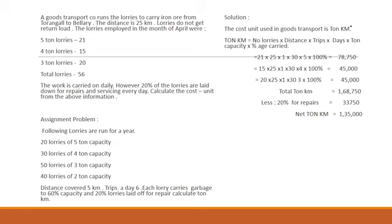As stated in the problem, 20% of the lorries were kept for repairs and servicing every day. Hence 20% of the above ton-kilometers is to be deducted. 20% of 168,750 = 33,750. So net ton-kilometers = 135,000. In this way ton-kilometers are to be calculated.